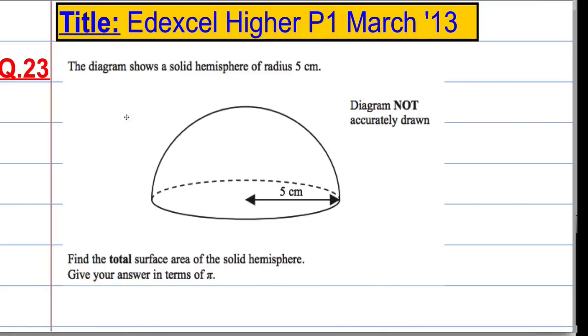Okay, question 23. We've got a solid hemisphere with radius 5 and we're asked to find the total surface area and give our answer in terms of pi.